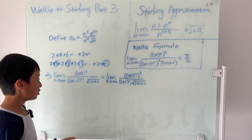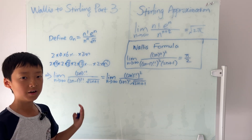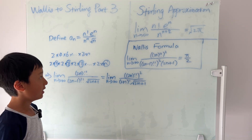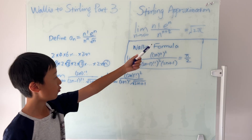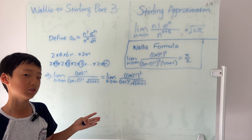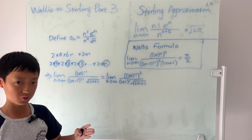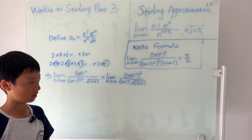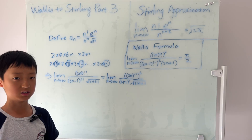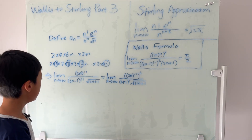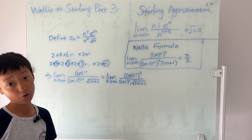Before we move on, these steps are all under the assumption that the Stirling approximation limit actually exists. Some of you might ask: don't we know? Well, we're assuming that we don't know. This is Part 3. In Part 4, we're going to prove that the limit exists, because if it doesn't, then every single step we've taken are all invalid. So right now we're just assuming it exists, and so these are all correct — hopefully.